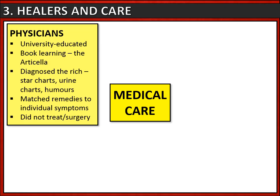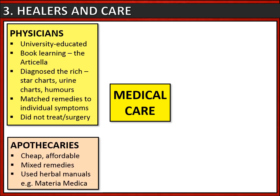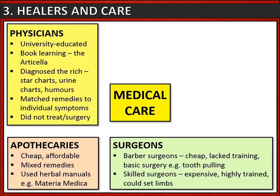Once the physician had recommended a treatment, the patient might go to an apothecary. Apothecaries mixed remedies and had a wide range of herbal cures, sourced from manuals like the Materia Medica. They were much cheaper and more affordable than physicians, so many patients skipped the physician and went straight to an apothecary. There were surgeons too: barber surgeons were the cheapest, lacked training, and only did basic surgery like tooth pulling. More skilled surgeons were very expensive — highly trained and able to set limbs — but available only to the very rich.